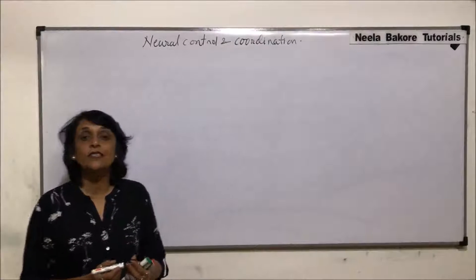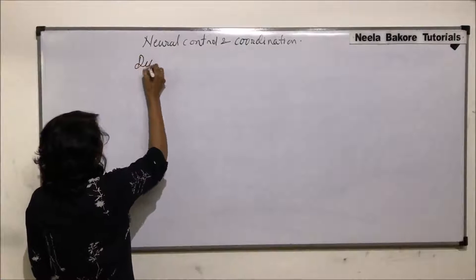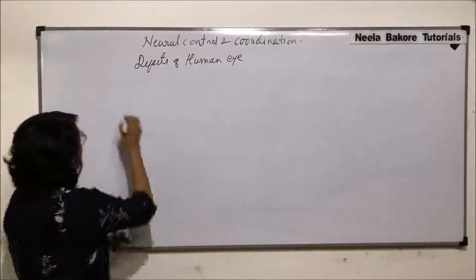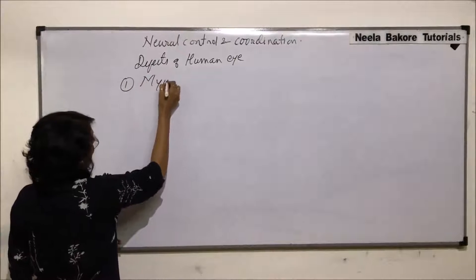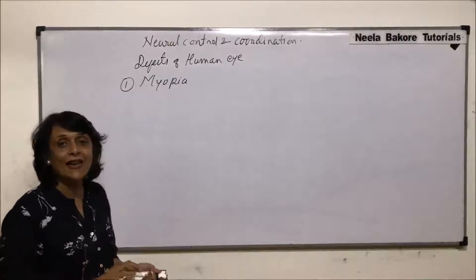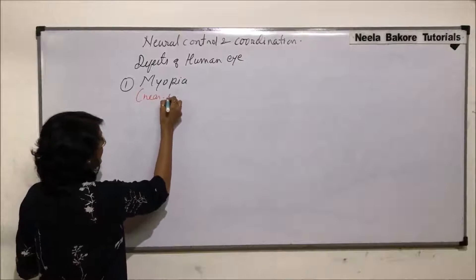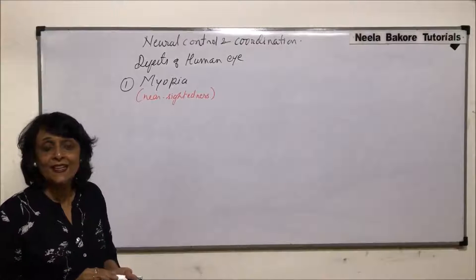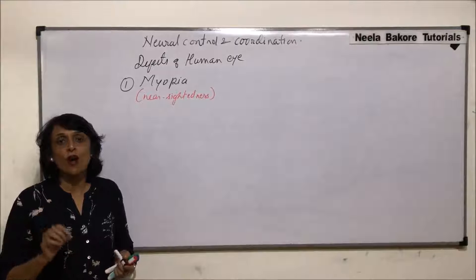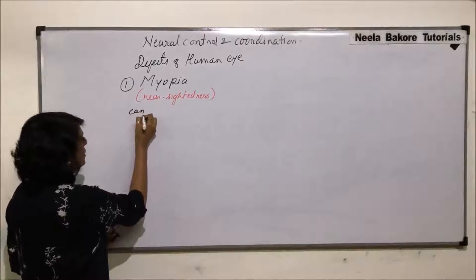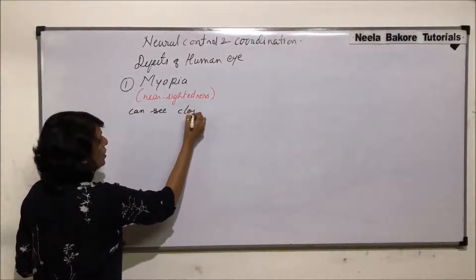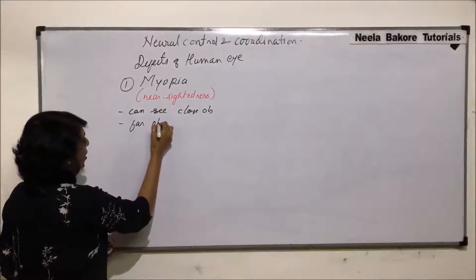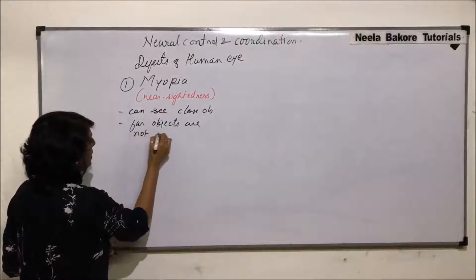In this segment we'll talk about the defects of the human eye. The first one we are starting with is myopia. Myopia is also known as near-sightedness. This means the person is able to see things which are closer, but far objects are not clearly visible — far objects are blurred or not clear.